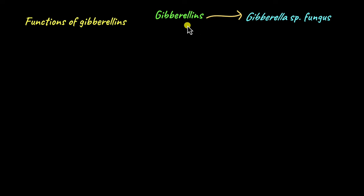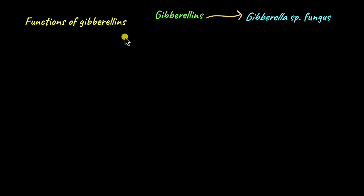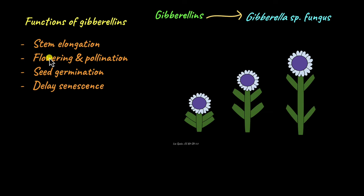The name gibberellins was derived from the Gibberella species fungus, which is where this hormone was first isolated — that's why it was called gibberellins. Gibberellins also have a lot of functions similar to auxins; they also promote growth. Gibberellins promote stem elongation by increasing the distance between two internodes.